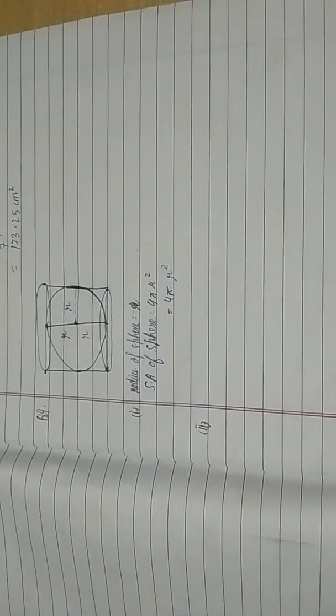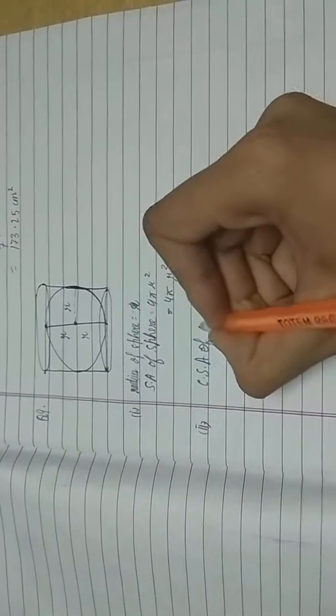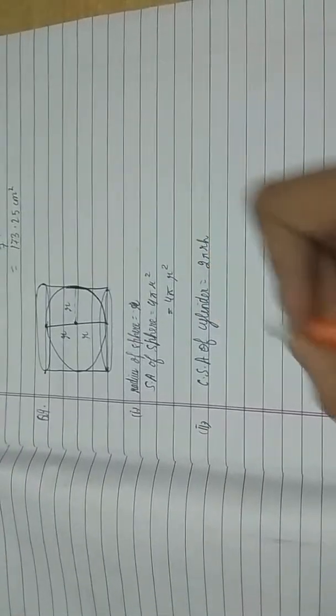Second part says to find the curved surface area of the cylinder. What is the curved surface area of a cylinder? Curved surface area of a cylinder is equal to 2πrh. This is the formula.